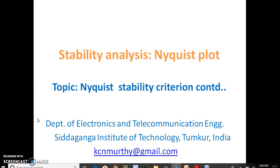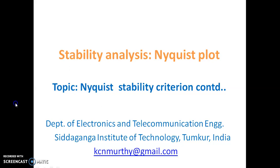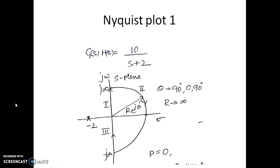Let us continue with stability analysis in the Nyquist plane. In the previous video we looked at how to plot the Nyquist plot for the open loop transfer function 10 divided by s plus 2. We know there is an open loop pole at minus 2, so this pole is not enclosed by the Nyquist contour covering the entire right hand side. That is why P is equal to 0.